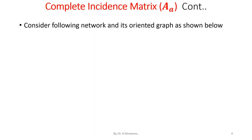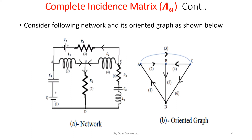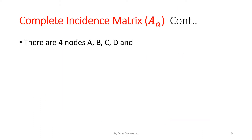Consider the following network and its oriented graph as shown below. Figure A represents the given network and figure B represents the oriented graph of the given network. In figure A, we have four nodes: A, B, C and D, and we have six branches as indicated in the graph.